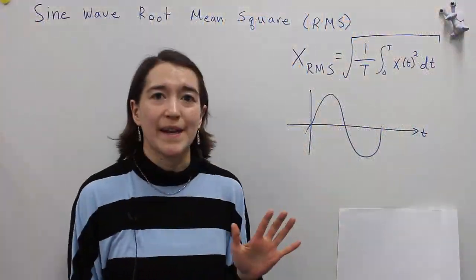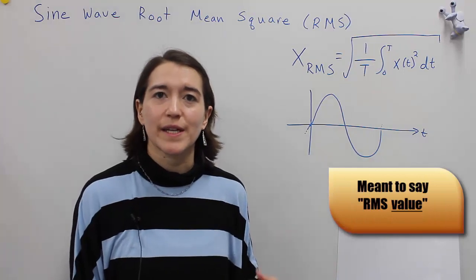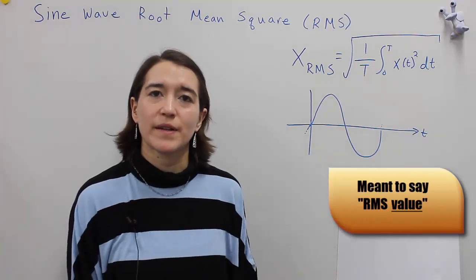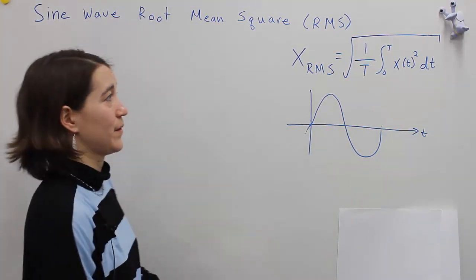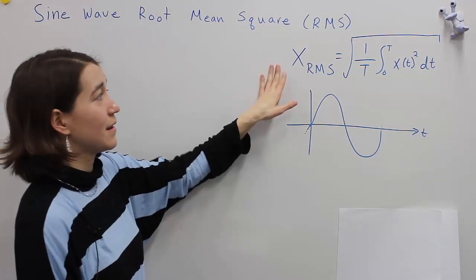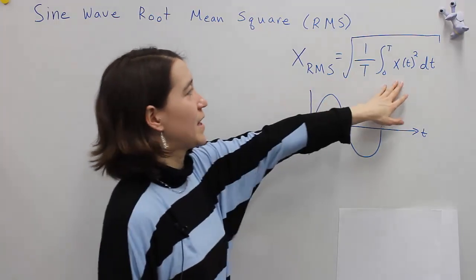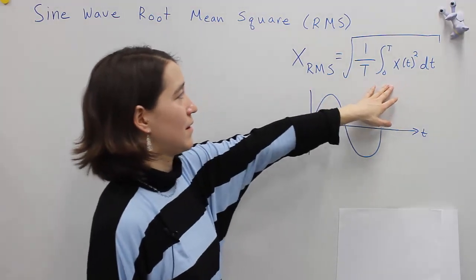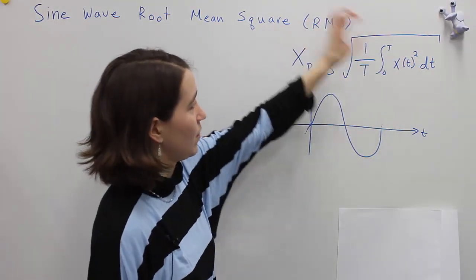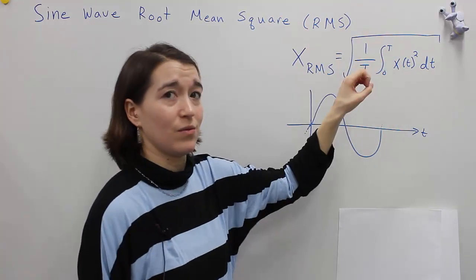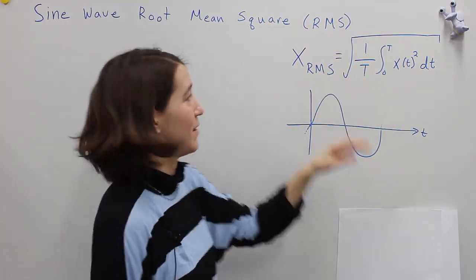We're going to look at the RMS signal and calculate it for a sine wave. This is the equation: take your signal, square it, then take the average of it, and then take the square root of that.